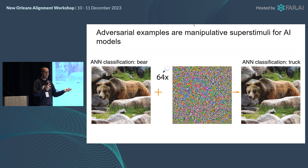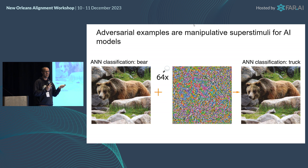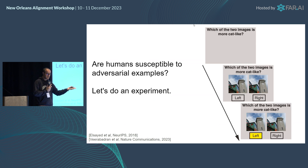In this case, that a bear is a truck. But humans are not artificial neural networks, so does this actually apply to us? Let's run an experiment.